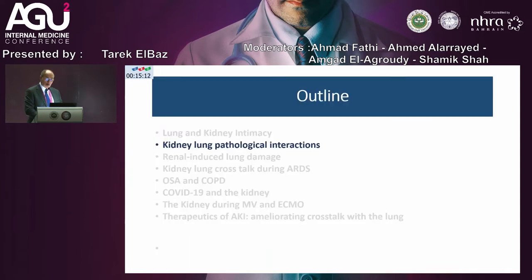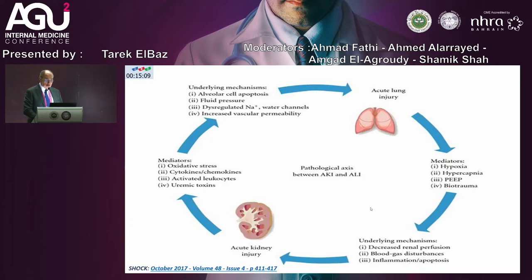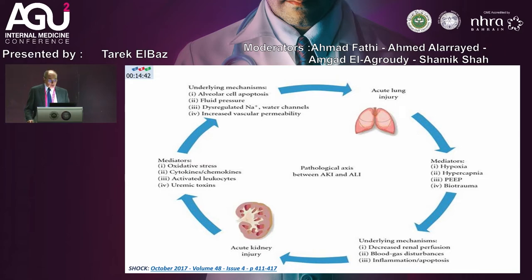How can the kidney and lung pathologically interact together? If we have a state of AKI, a lot of mediators are secreted from the renal tubules along with oxidative stress and retention of uremic toxins — particularly p-cresol and indoxyl sulfate — both of which are injurious to the capillaries of the lung, leading to increased vascular permeability and dysregulation of sodium and water channels, causing fluid to enter the alveolar spaces and resulting in acute lung injury.